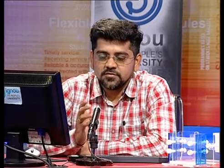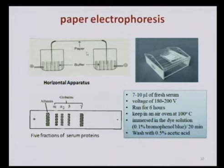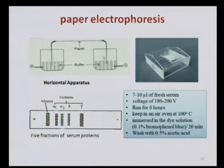Since we are focusing on separation of proteins, let us begin with separation of serum proteins using paper electrophoresis. The components required are: a supporting medium — Whatman filter paper, electrophoresis apparatus, power pack, buffer system, bromophenol blue, acetic acid, and absolute alcohol. In the setup, there is a buffer system in two tanks and in the middle a paper onto which the serum sample is placed. When current flows through the buffer system, electricity passes to the paper, enabling the proteins to separate.